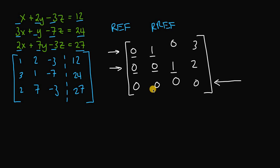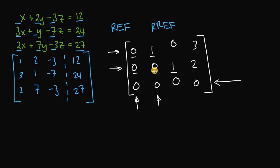The third rule is that leading 1s are at least one space to the right of the leading 1 above it. In the second row, the leading 1 is in the third column, which is at least one space to the right of the leading 1 above it in the second column. If a leading 1 were right underneath the one above it, this would not be in reduced row echelon form.